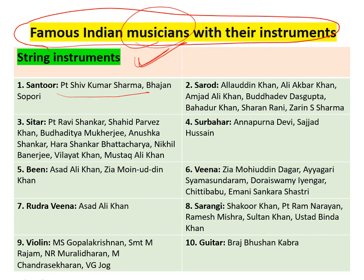Now moving to famous musical instruments and their associated musicians. Under string instruments: Sarod — important names include Alauddin Khan, Amjad Ali Khan, Bhadur Khan, Sharar Rani, and Zareen Sharma. Sitar is very important — Pandit Ravi Shankar is the most famous name associated with it.